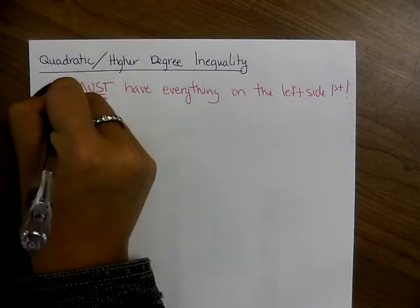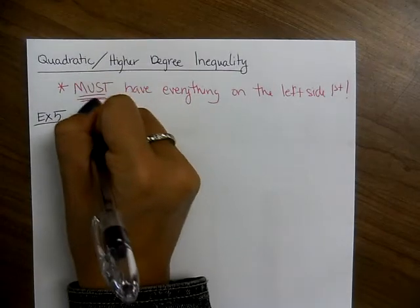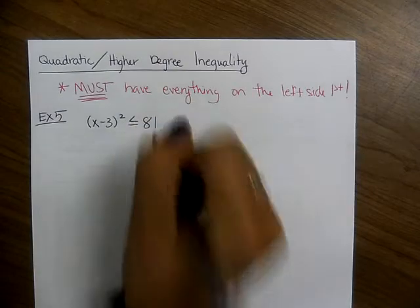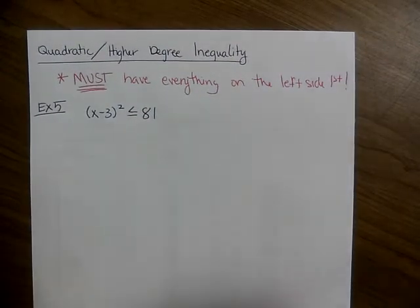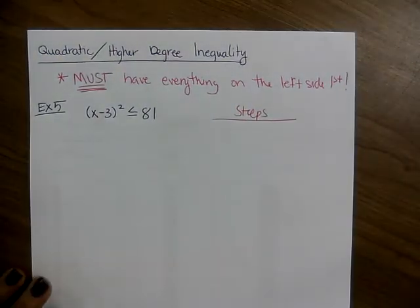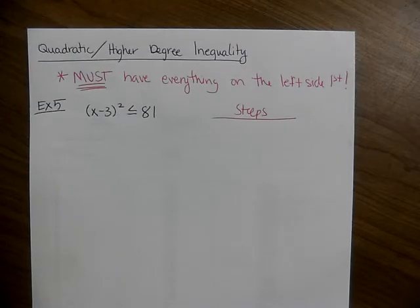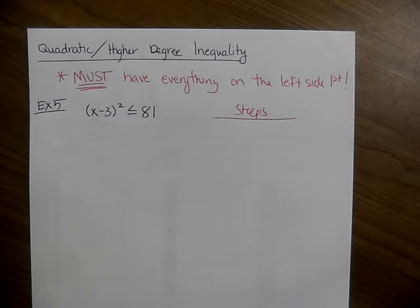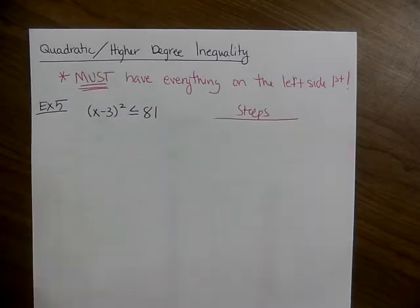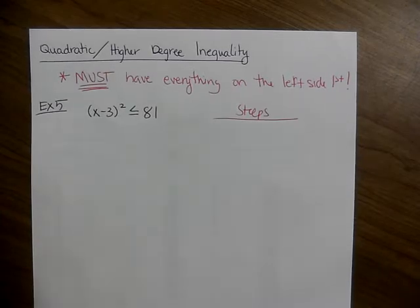Let's look at example 5: x minus 3 squared is less than or equal to 81. The most common mistake is seeing that 81 is a perfect square and taking the square root of both sides — putting a 9 there. You cannot do that. As tempting as it looks, you have to get everything to the left first.